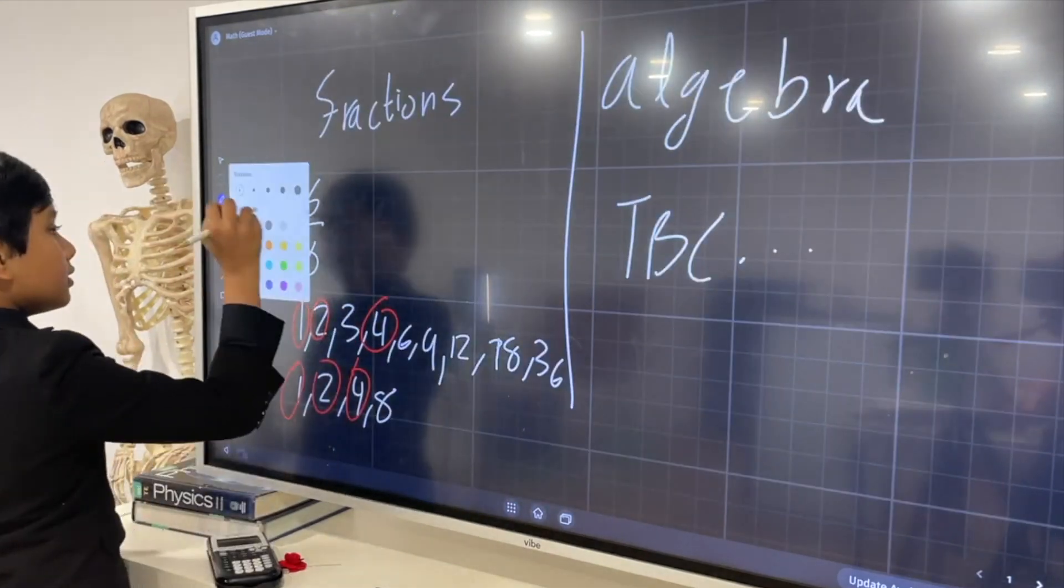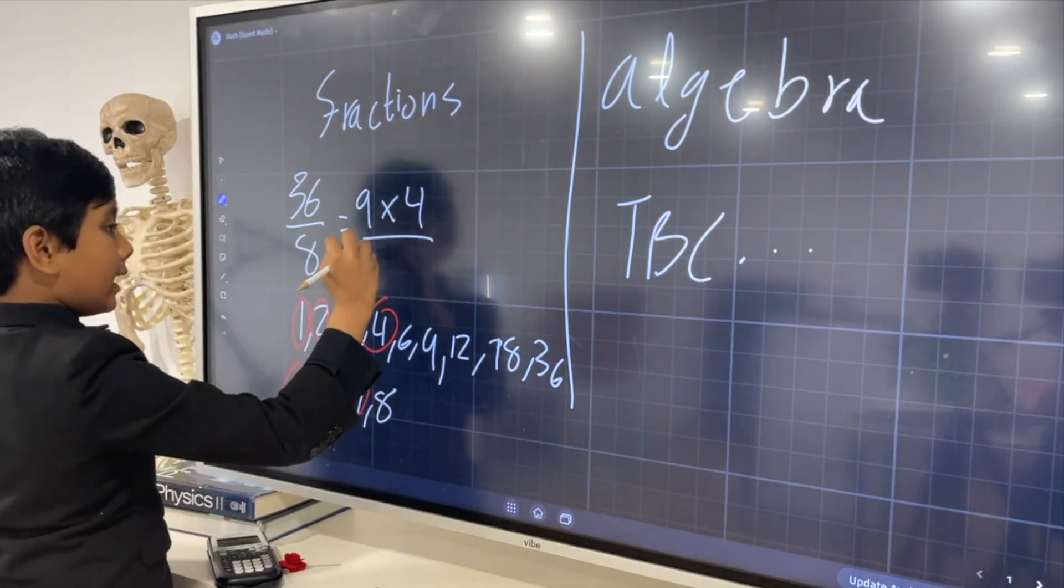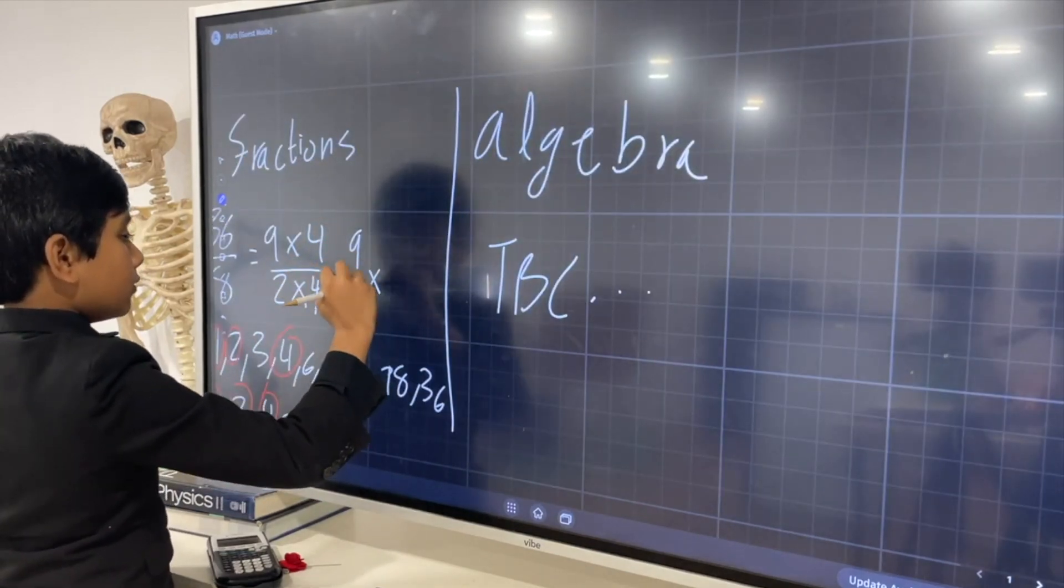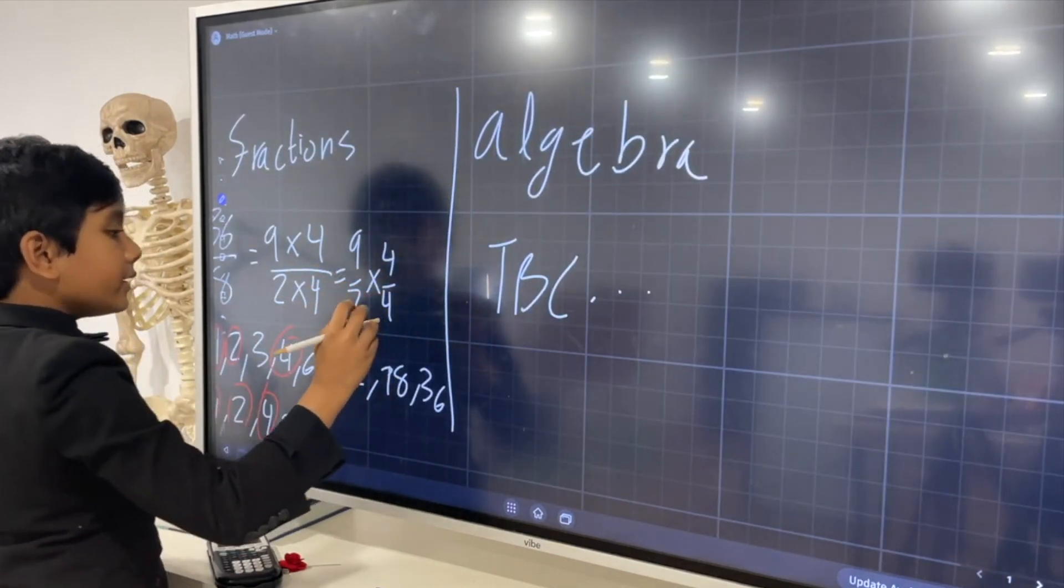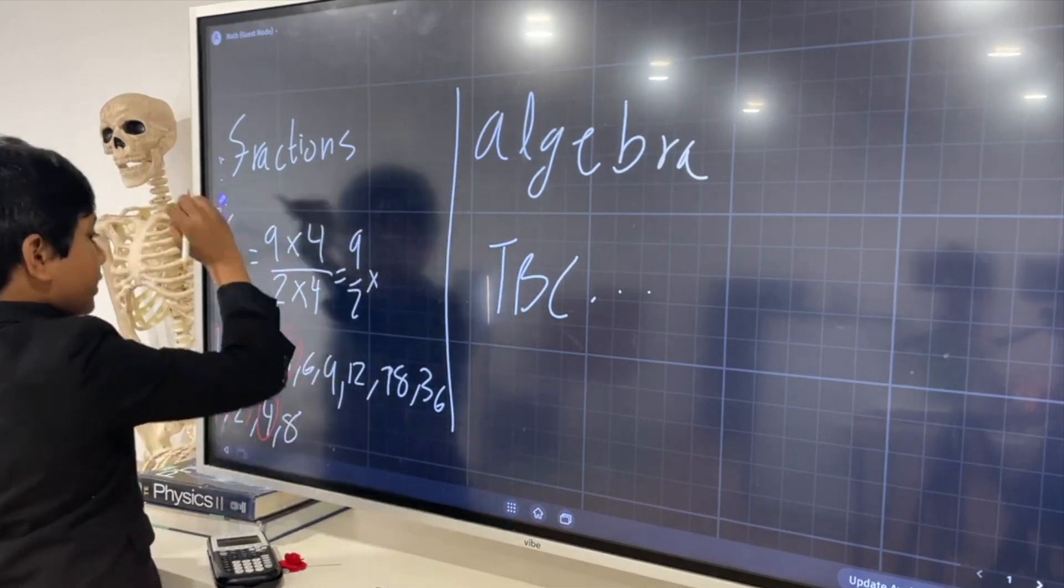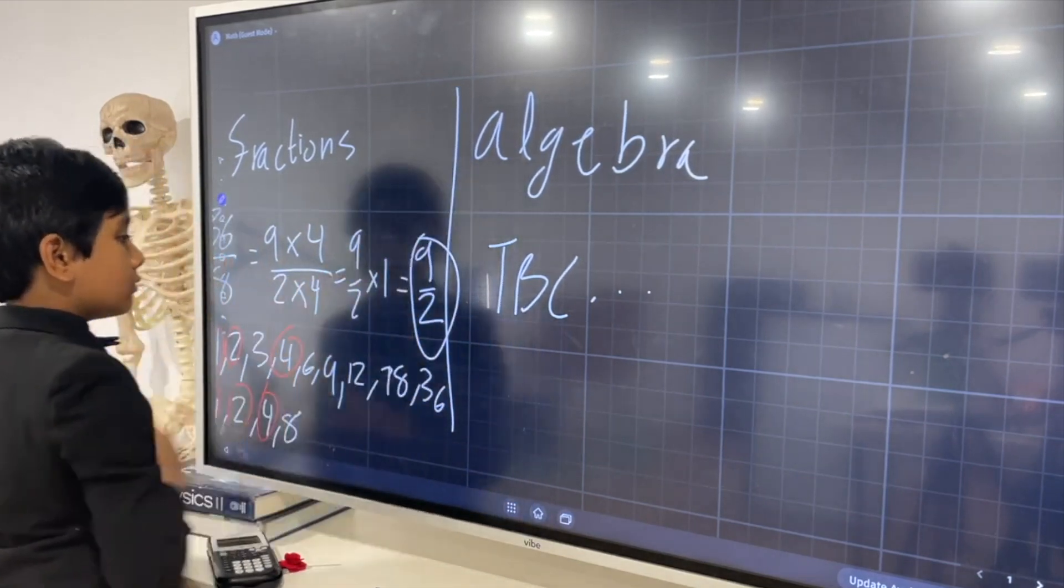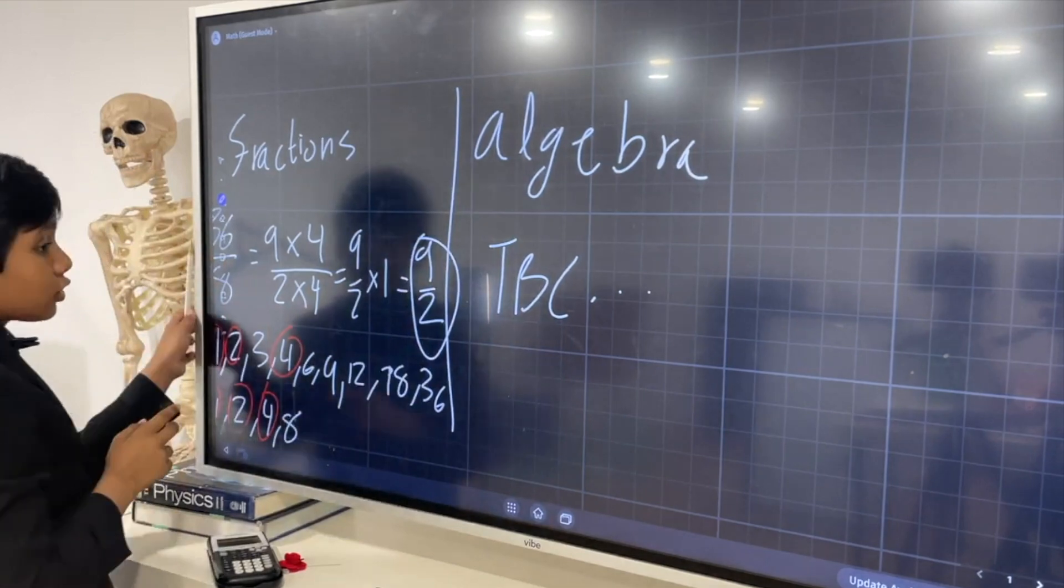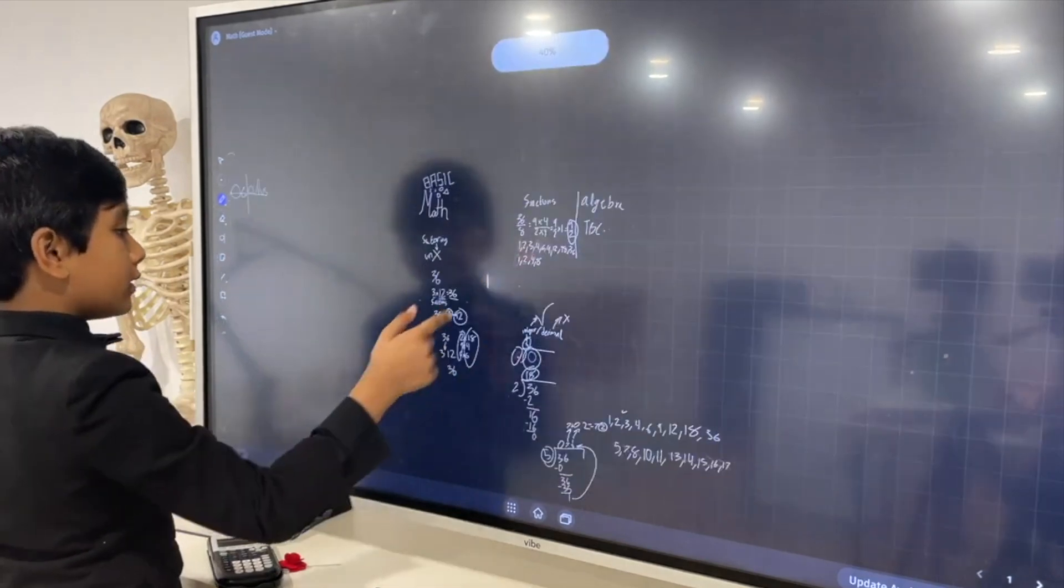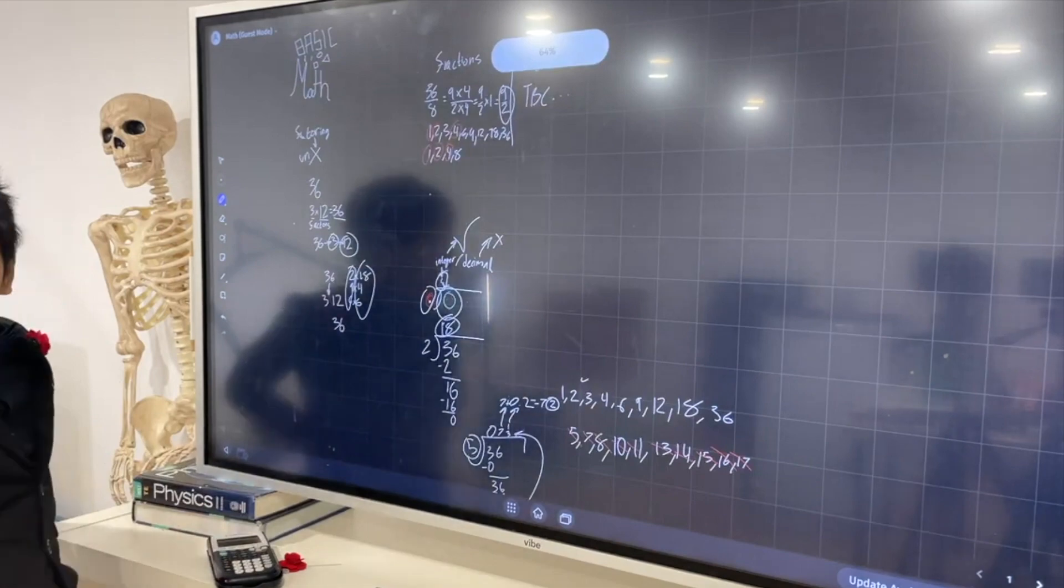So, we could split 36 into 9 times 4, and we could split 8 into 2 times 4, which gives us 9 over 2 times 4 over 4. 4 over 4 is 1, and that just gives us 9 divided by 2, which we can't simplify further, because 9 is not divisible by 2. So, that's an application of factoring and how to factor.